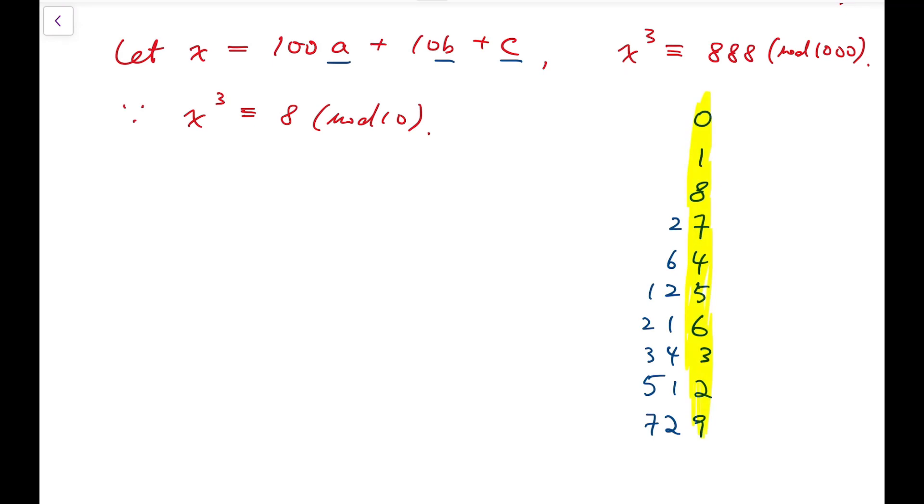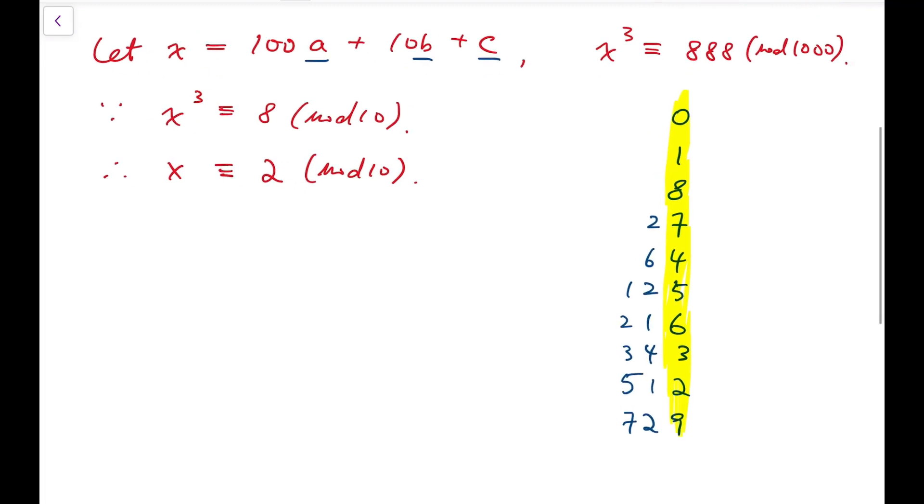Now, from this, we know that we can only have a cube to be congruent to 8 mod 10, if the number itself is congruent to 2 mod 10. That means the last digit of x is 2. So that means this c equals 2.